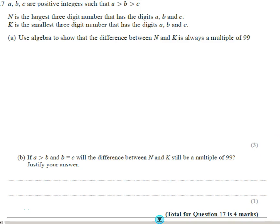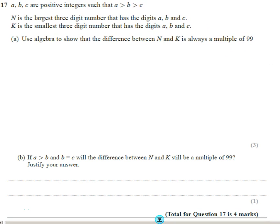Question number 17, let's just move this so you can see the question number. Okay, we've got three positive integers. A is the biggest one, B is the middle-sized one, and C is the smallest.